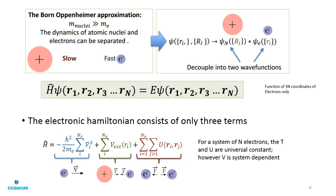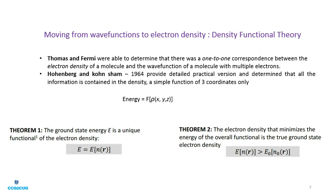In practice, DFT involves approximations of electron-electron interactions, and this limits the achievable accuracy. The major theme of DFT is moving from wave function to electron density. The wave function depends upon 3N coordinates — three coordinates for each electron — whereas electron density depends upon only three coordinates. This reduction in dimensionality greatly reduces the number of basis functions and in turn significantly decreases the computational cost.